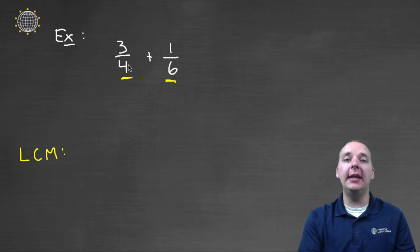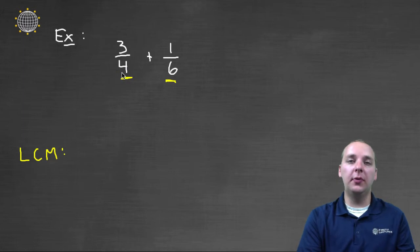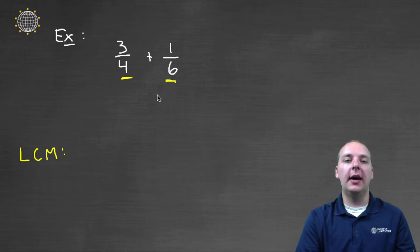It's the smallest number that you can have that's both a multiple of four and a multiple of six. So for example eight, eight's a multiple of four, but eight is not a multiple of six. You could take something like twenty-four. Twenty-four is a multiple of four and it's a multiple of six, but it's not the lowest common multiple that we can have. For this one I think it's actually twelve, and here's how I know that.